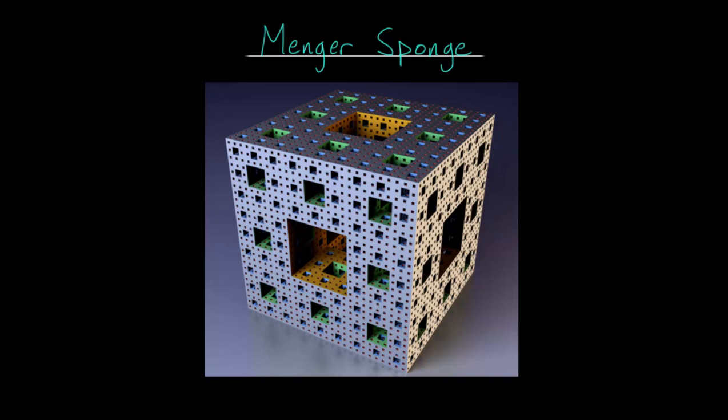In this video, I'd like to talk about the Menger sponge, which is a fractal that is named after the Austrian-American mathematician Carl Menger.